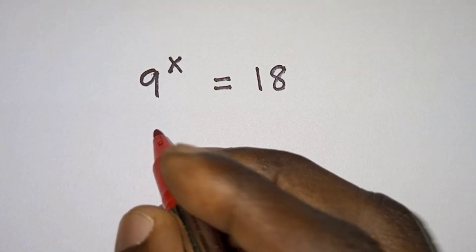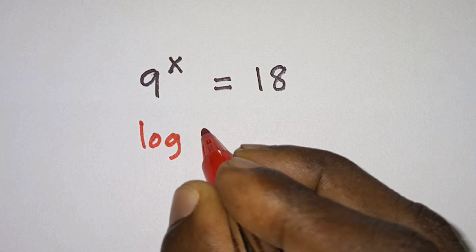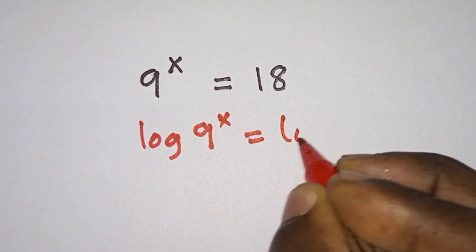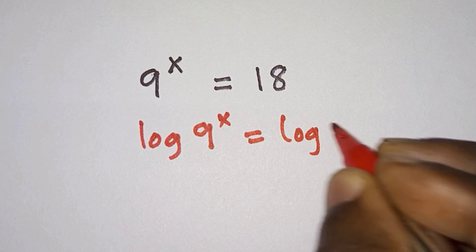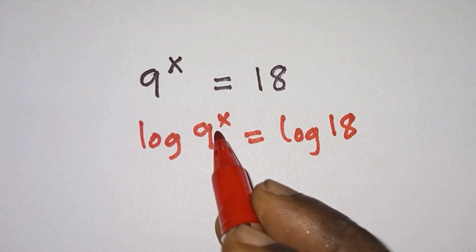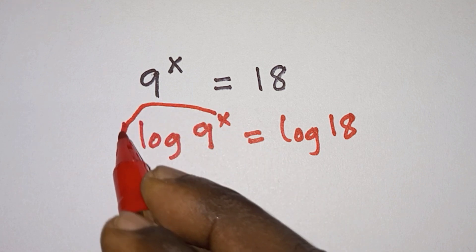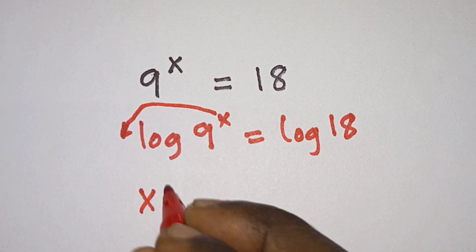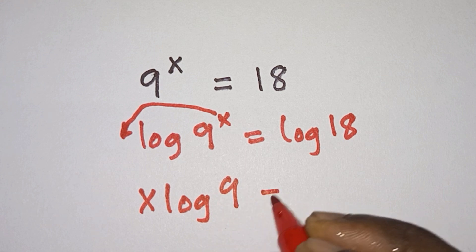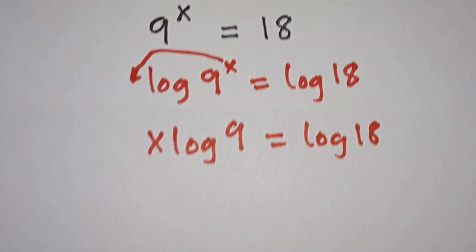First of all, let's introduce log in base 10 on each side of the equation. So we're going to have log 9 to the power x is equal to log 18. And we know that in logarithm, the power becomes the leading number, so we're going to have x log 9 is equal to log 18.